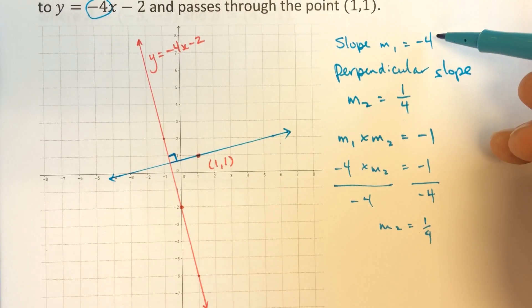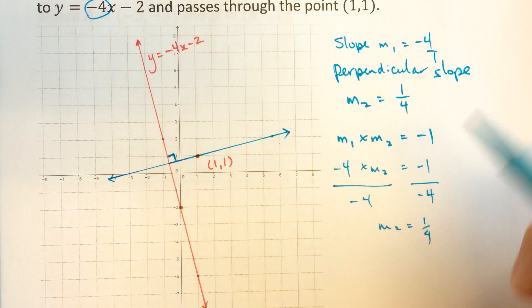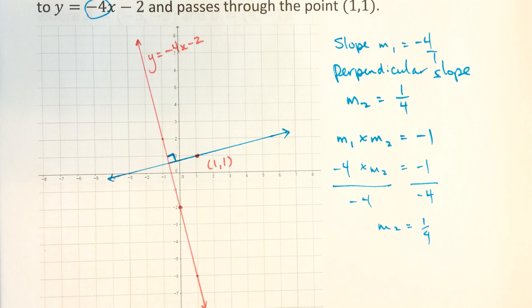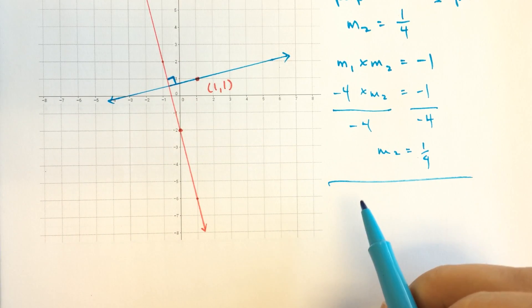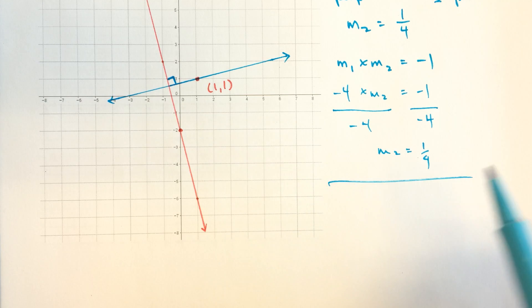For most people, they like to just say, I'll flip it over. This is 4 over 1. I'll flip it over and change the sign, the negative reciprocal. So now we know we have our slope, and we have one point that we can use.